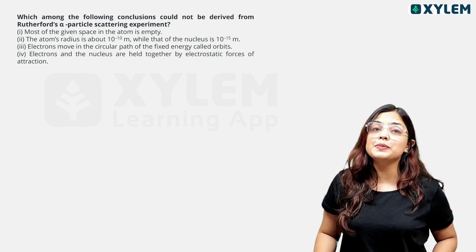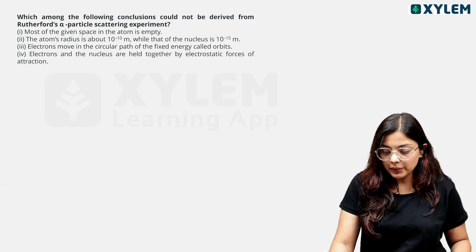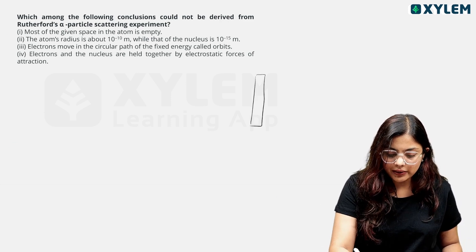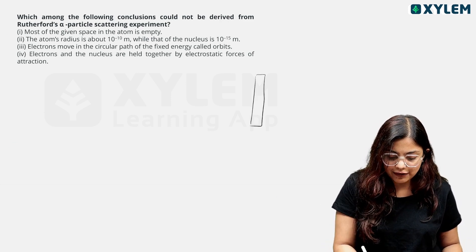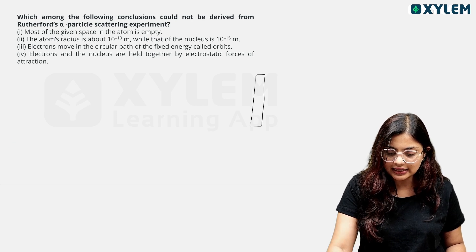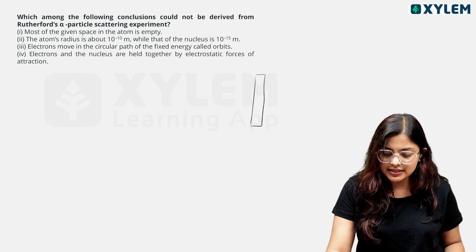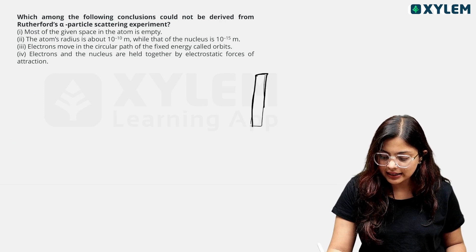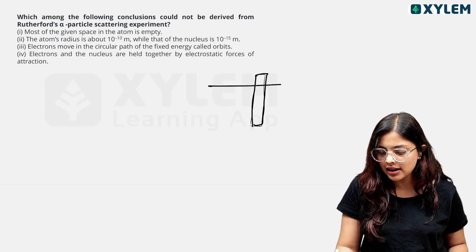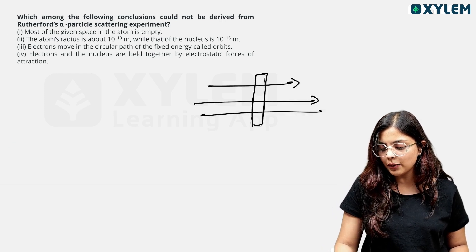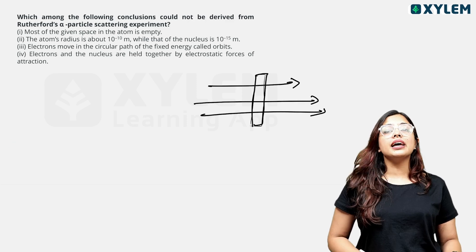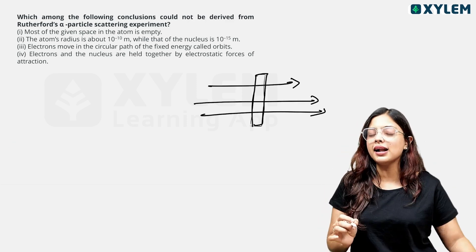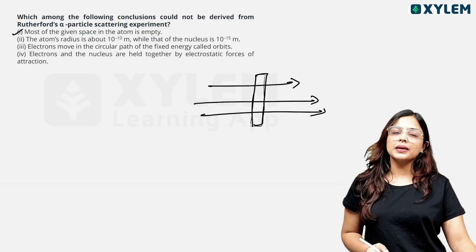The first observation: we have a gold foil. In this gold foil, the majority of the alpha particles pass through, meaning the majority of the space is empty. That is correct.